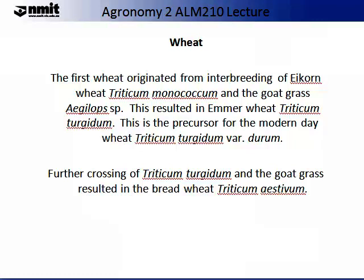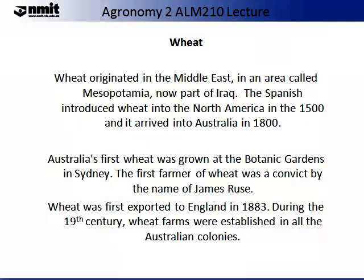Further crossing of Triticum turgidum and the goat grass resulted in bread wheat, Triticum aestivum. Wheat originated in the Middle East in an area called Mesopotamia, which is now part of Iraq. The Spanish introduced wheat into North America in the 1500s, but it did not arrive in Australia until the 1800s. Australia's first wheat was grown at the Botanic Gardens in Sydney. The first farmer of wheat was a convict by the name of James Ruse. Wheat was first exported to England in 1883 during the 19th century.